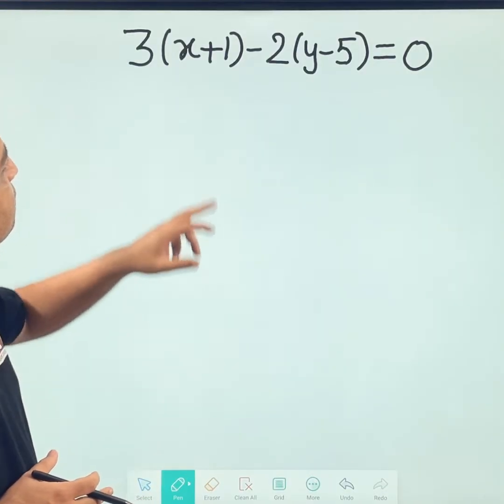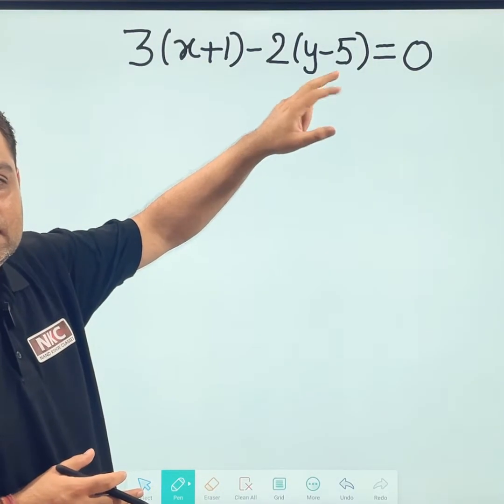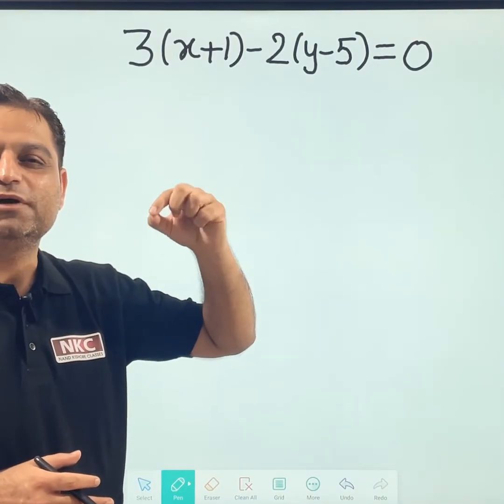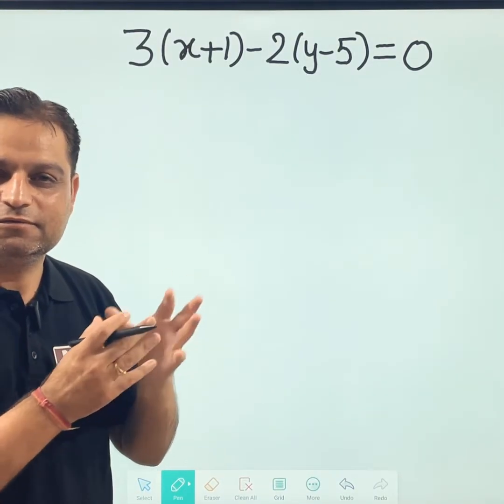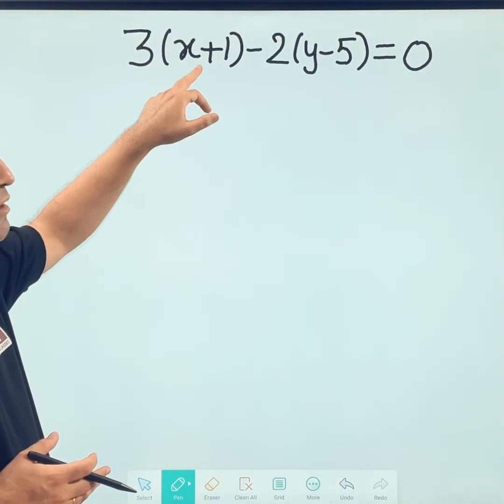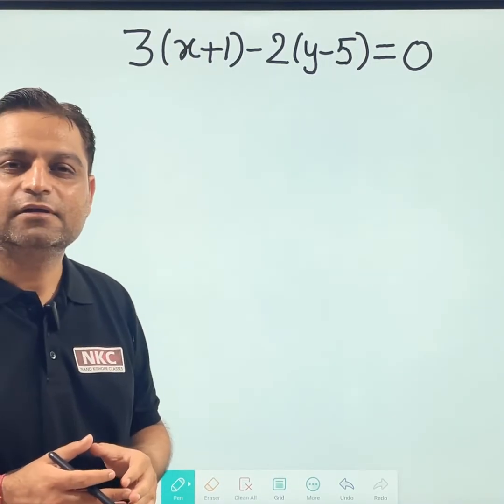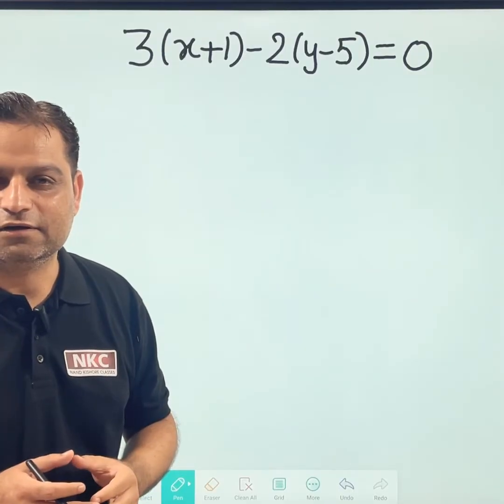Have a look very carefully. 3 times x plus 1 minus 2 times y minus 5. First of all, we should be comfortable in opening the parentheses brackets. The outer value 3 will be multiplied with all the values inside the bracket. Distributive property we are using here.